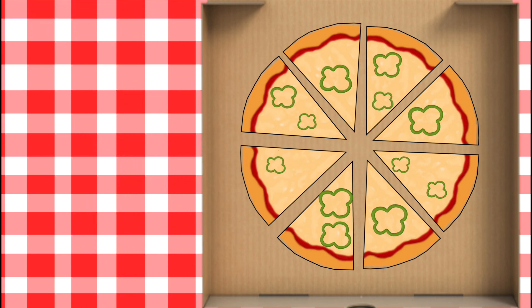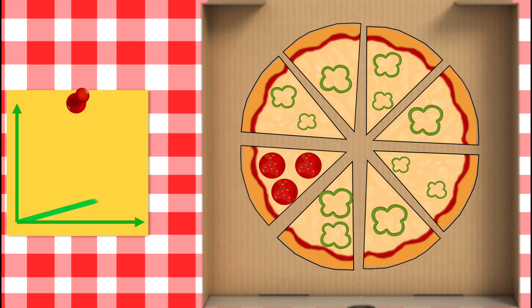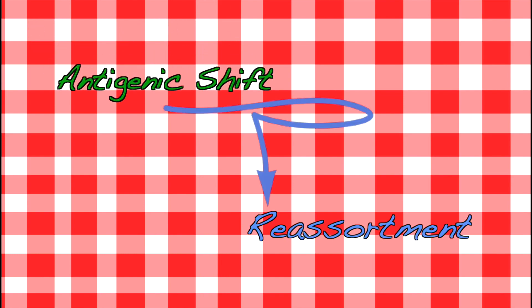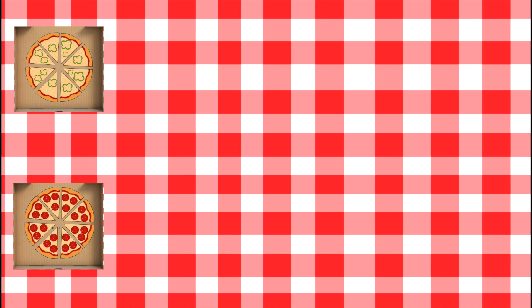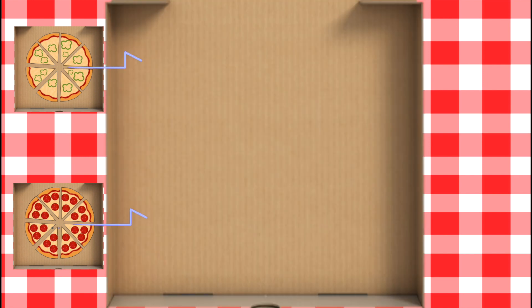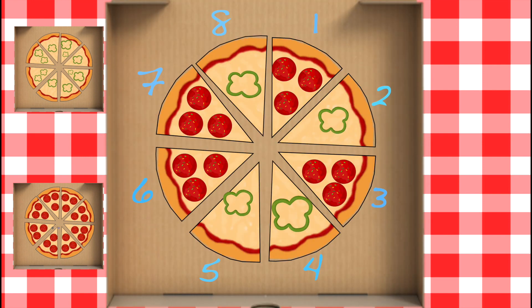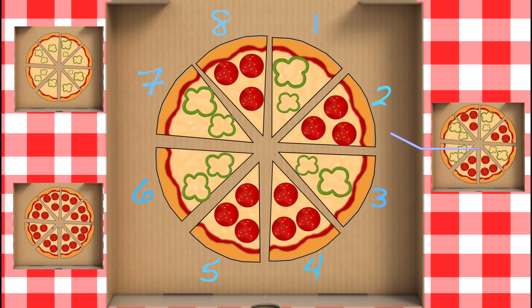More drastically, an entire segment gets replaced. This sudden change is called antigenic shift. Antigenic shift can occur through the phenomenon called reassortment — when two different strains of the virus infect the same cell, corresponding segments get exchanged, just as switching pizza slices would yield a whole new pizza.